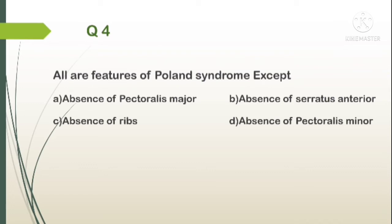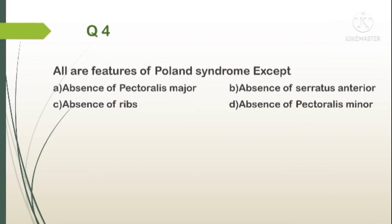Question number 4. All are features of Poland syndrome except: A. Absence of pectoralis major, B. Absence of serratus anterior, C. Absence of ribs, D. Absence of pectoralis minor. Answer: B. Absence of serratus anterior — all the other features are present in Poland syndrome, along with breast hypoplasia.